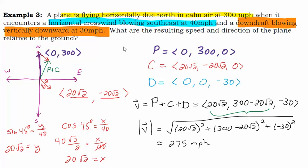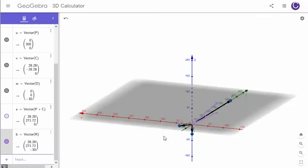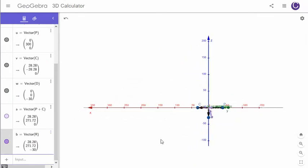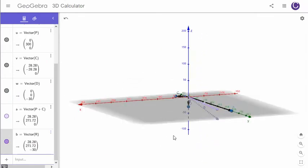The remainder of the problem asks us to find the direction of the plane. That's just a preview of coming attractions. We're going to learn how to find the direction and express these angles in a different lesson.